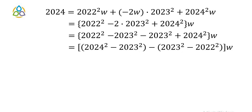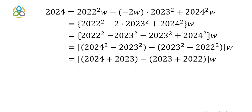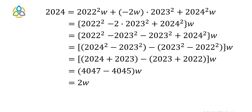Applying the difference of squares a² − b² = (a+b)(a−b): 2024² − 2023² = (2024 + 2023)(1) = 4047, and 2023² − 2022² = (2023 + 2022)(1) = 4045. The bracket equals 4047 − 4045 = 2. So we have 2w = 2024, giving w = 1012. Therefore u = 1012 and v = −2w = −2024.